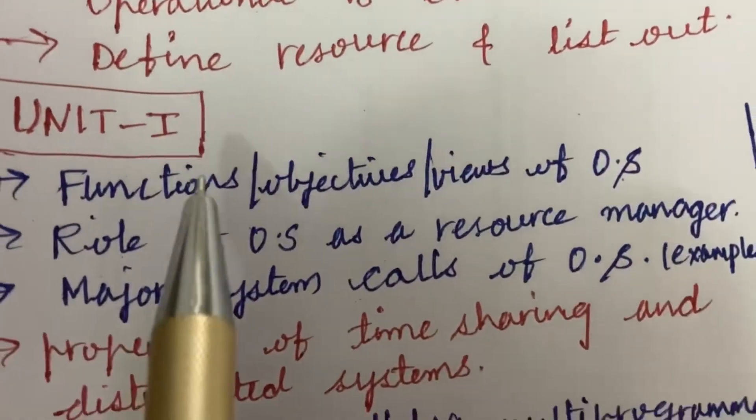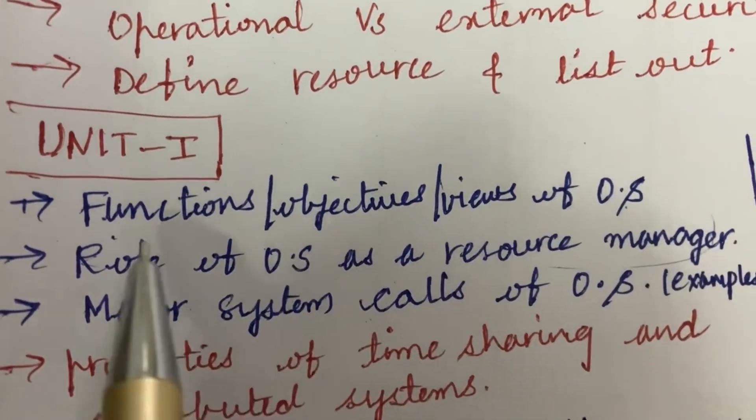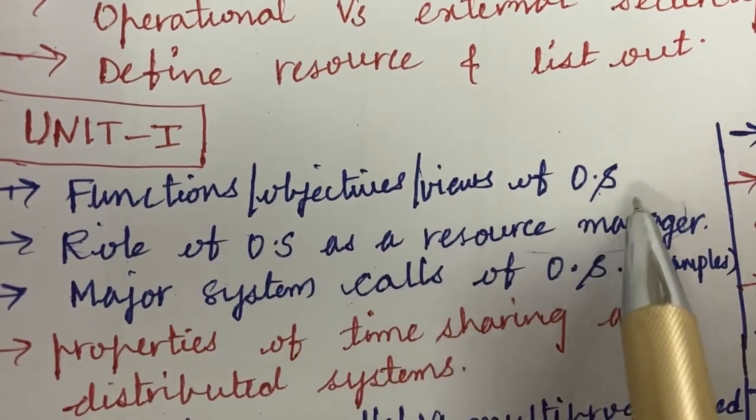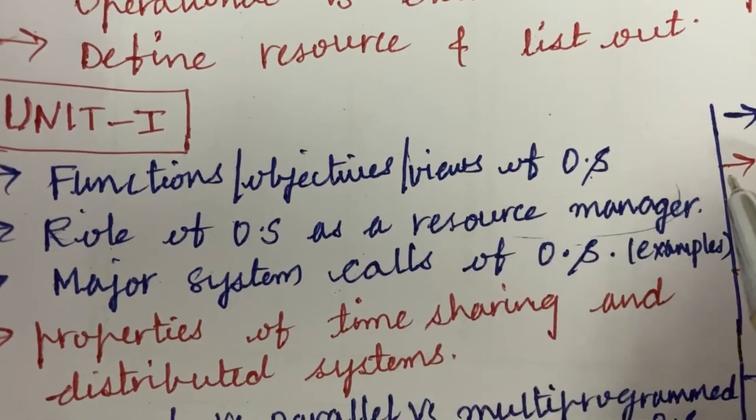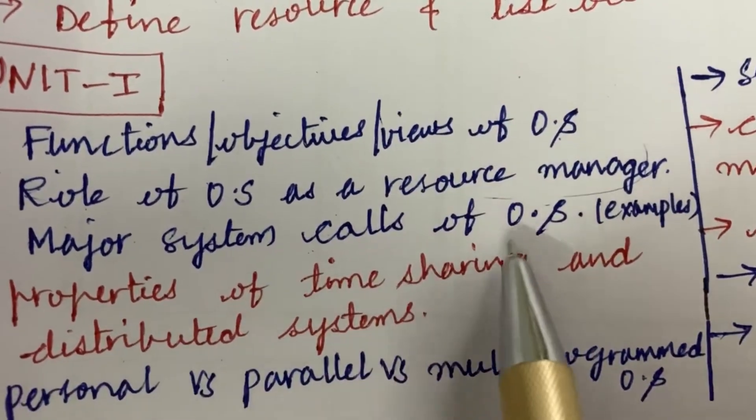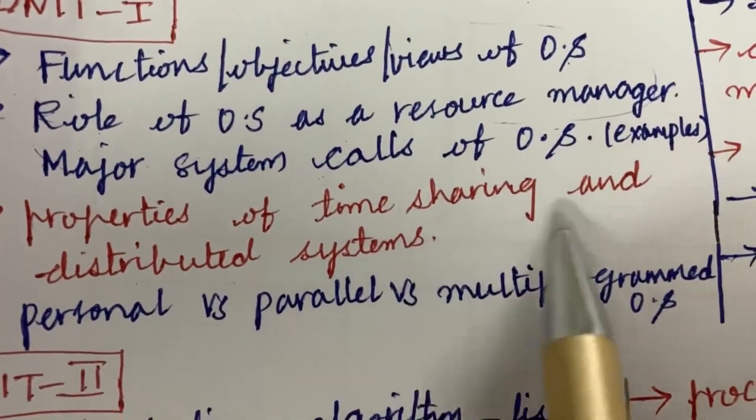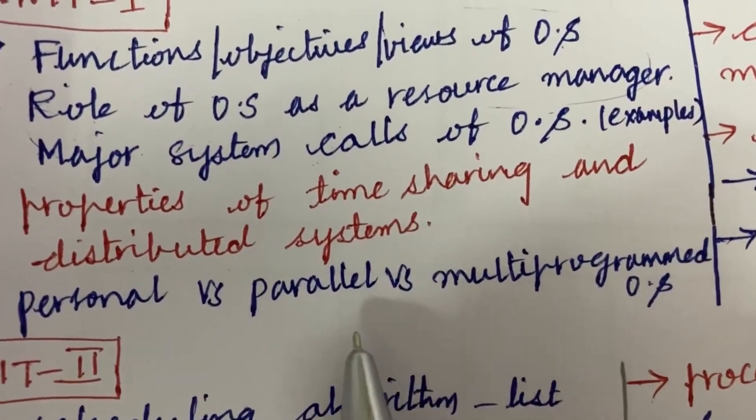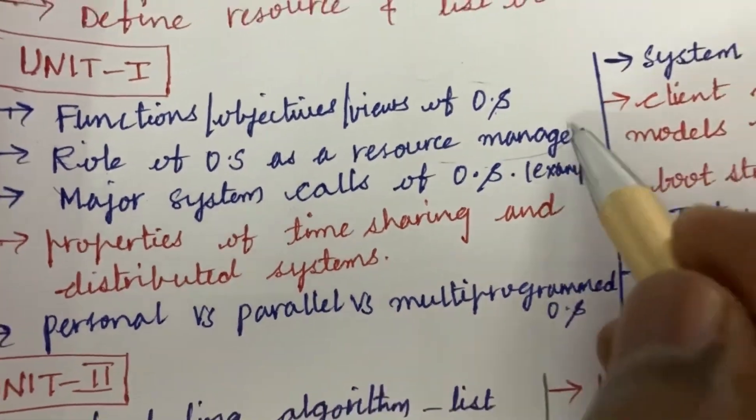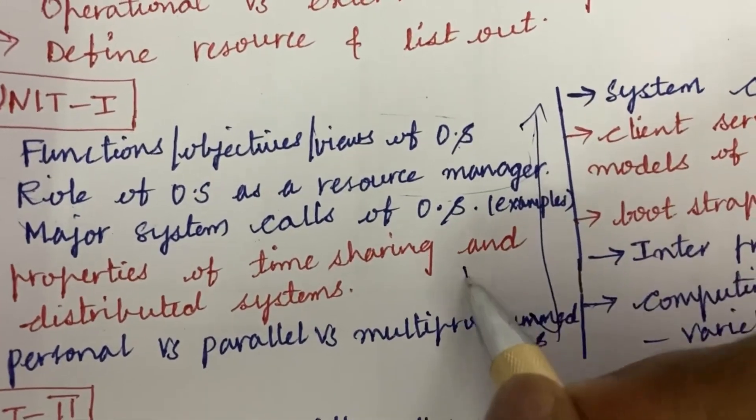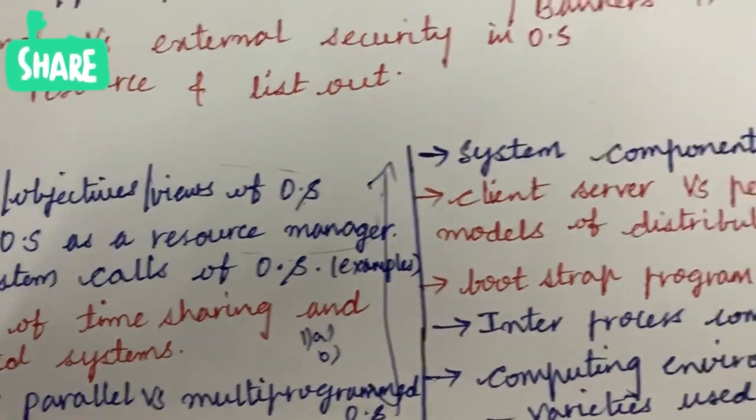Now let's look at the important concepts of Unit 1 and the very important gunshot questions: functions, objectives, or views of operating system, role of OS as a resource manager, and the management system calls of OS. From this part you will be getting one question for sure. The properties of time sharing and distributed systems, as well as multi-programmed, parallel, and personal operating systems. From this part you are going to get one a as well as one b.